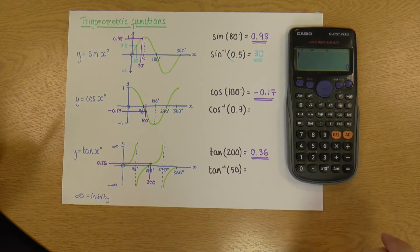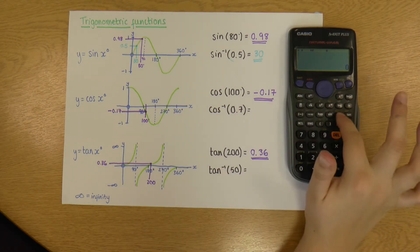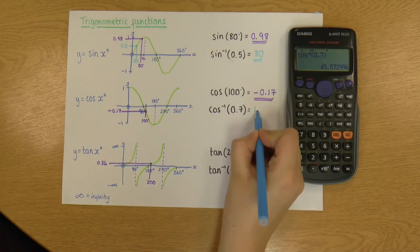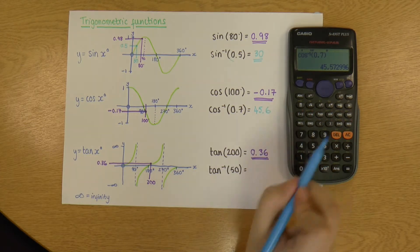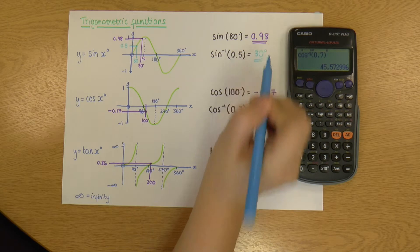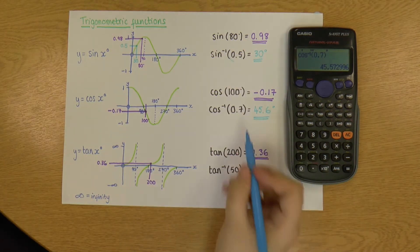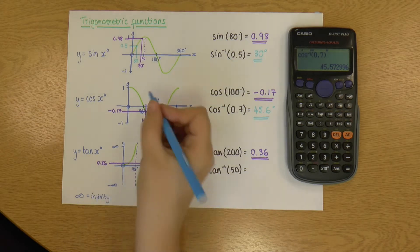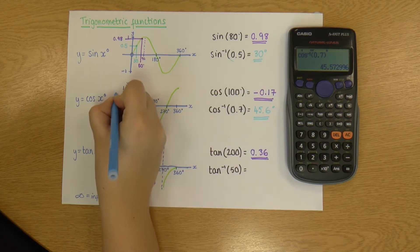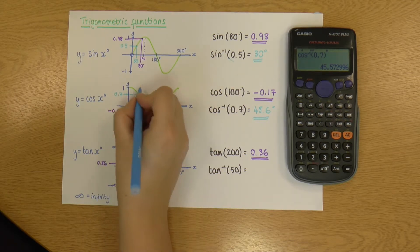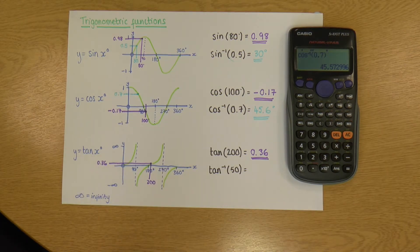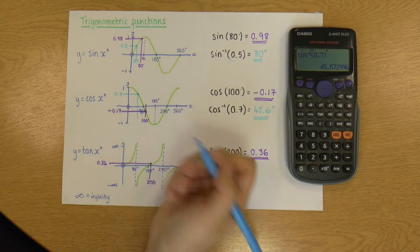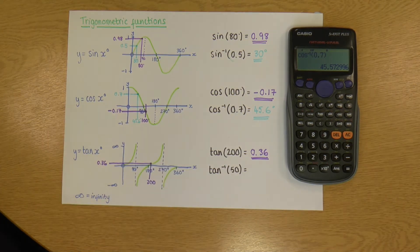So cos⁻¹ is 0.7. So my cos⁻¹ is above the cos. So shift, cos, and what are we doing? 0.7. And that has given me a value of 45 point round to 6. Oh, and these are degrees, aren't they? So I should put my degree symbol in. And again, if I wanted to show this on the graph, so my cos⁻¹ is at 0.7. So 0.7 is, I reckon, about there. If I follow this along, at that point is where the cos links up with 0.7. And I go down. It looks about halfway, which is about 45.6.